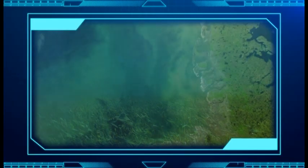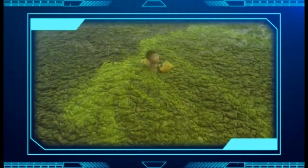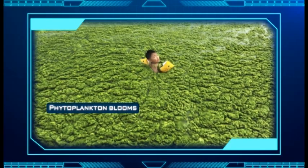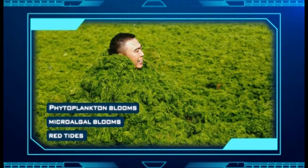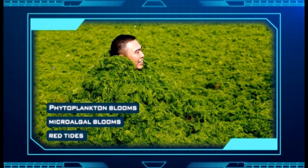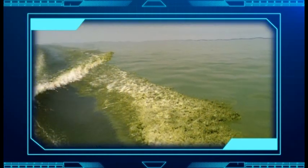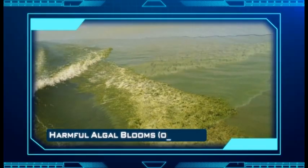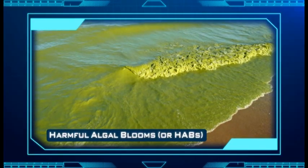However, their roles become much more threatening when they proliferate rapidly or bloom. Phytoplankton blooms, microalgal blooms, or red tides are terms used for this naturally occurring phenomena. The scientific community refers to these events as harmful algal blooms, or HABs.